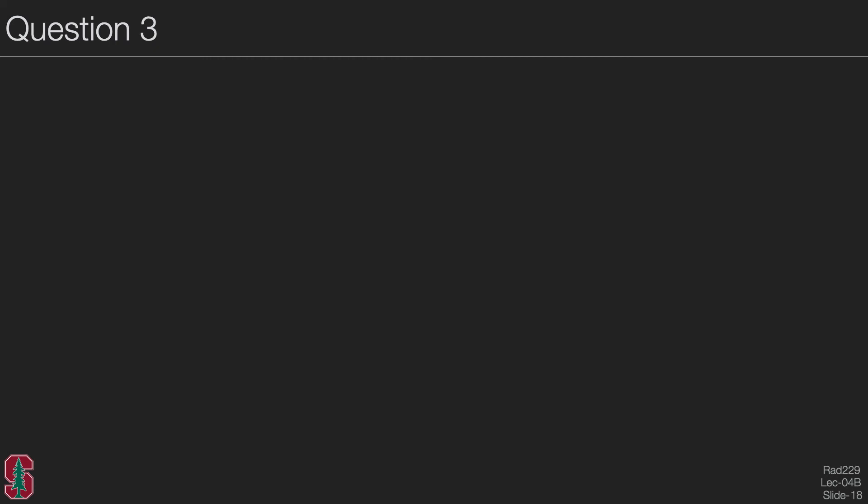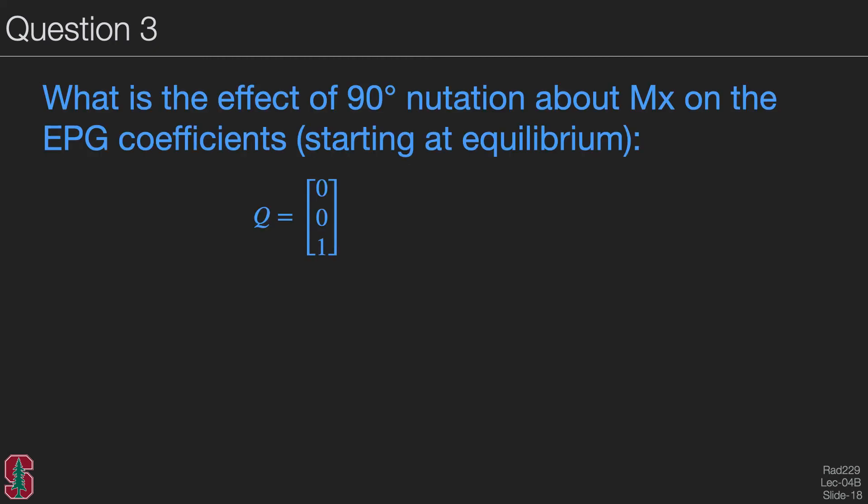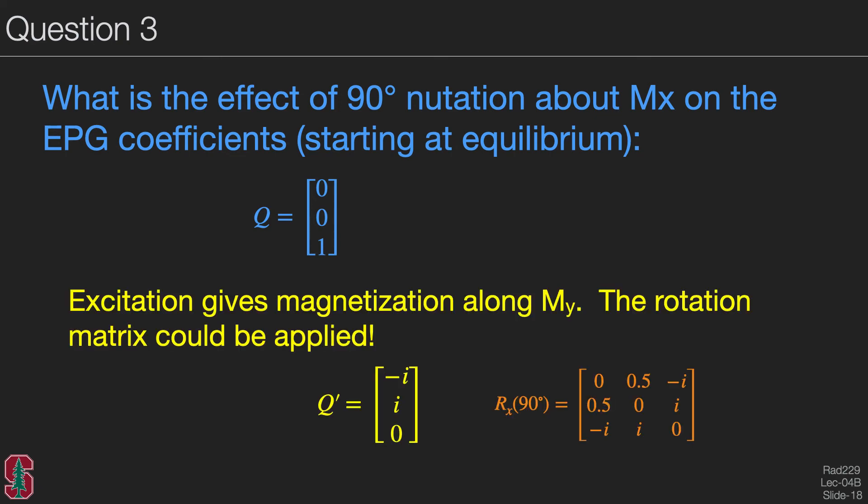So let's review the effect of an RF pulse in this question. So if we start with equilibrium magnetization, the EPG coefficients are as shown here. And the question is, what is the effect of a 90 degree notation about MX? So recall that the excitation will give magnetization along MY. The magnetization is negative because this is a right-handed rotation. And we could actually calculate this rotation matrix if we'd like to, although this one can be done fairly intuitively. Notice also that the elements of the EPG state matrix are complex conjugates of each other.